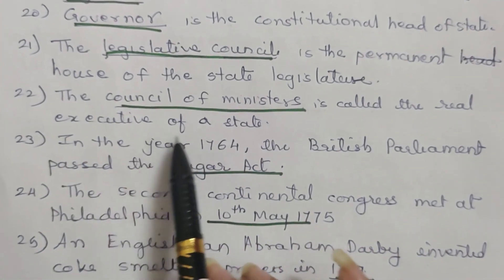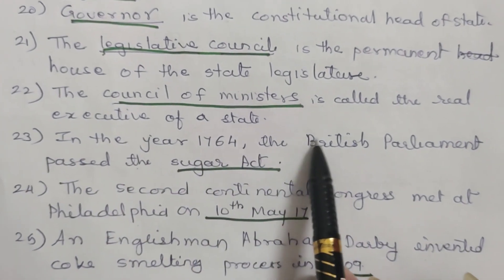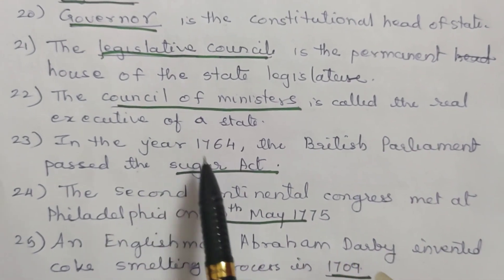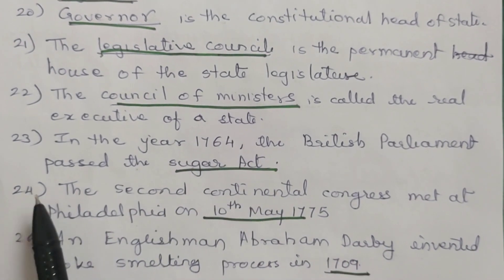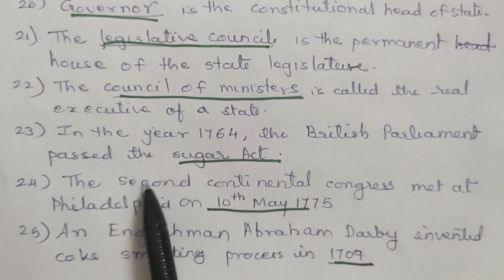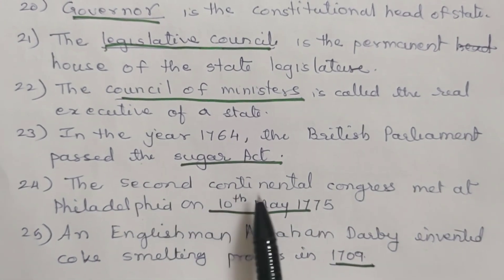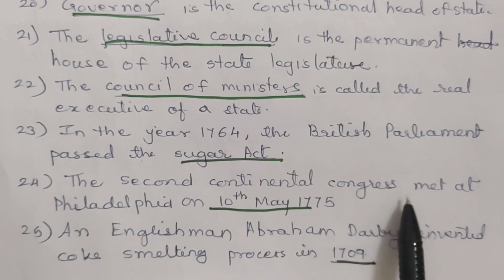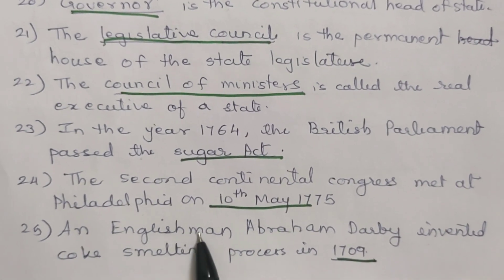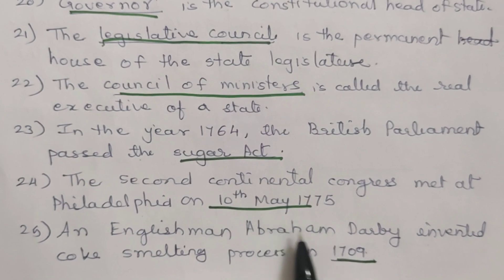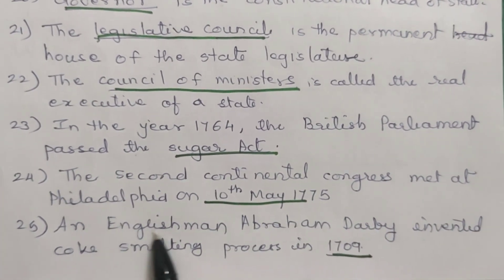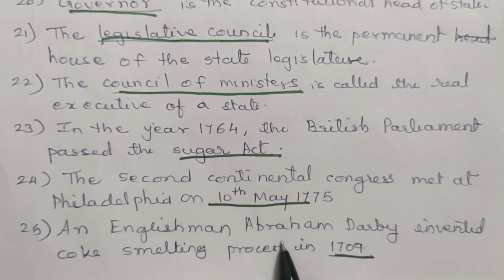23. In the year 1764, the British Parliament passed the Sugar Act. 24. The Second Continental Congress met at Philadelphia on 10th May 1775. 25. An Englishman, Abraham Darby, invented the coke smelting process in 1709.